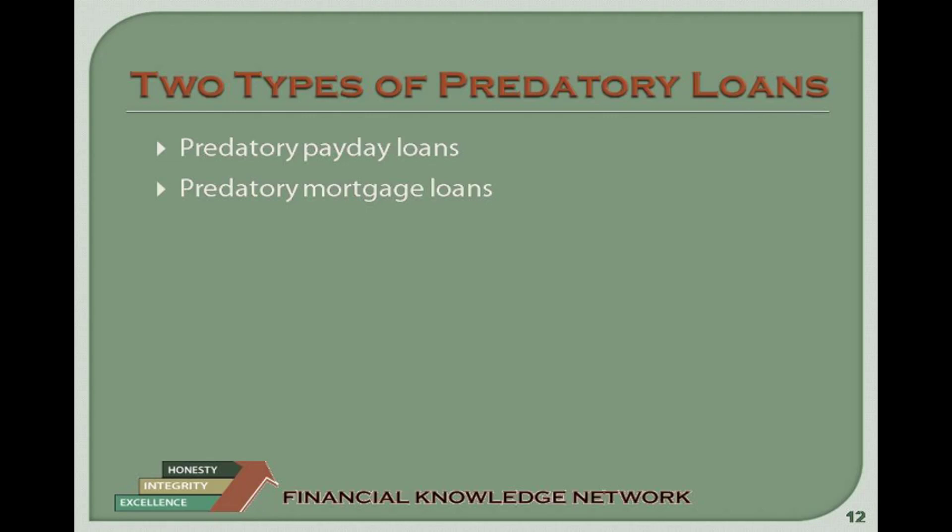Loan Flipping: A lender flips a loan by refinancing it several times within a short time frame to generate fee income without providing any net tangible benefit to the borrower. Flipping can quickly drain borrower equity and increase monthly payments, sometimes on homes that had been previously owned free of debt. Unnecessary Products: Sometimes borrowers may pay more than necessary because lenders sell and finance unnecessary insurance or other products along with the loan. Asset-Based Lending: Predatory lenders may approve a loan based on the value of a customer's equity in the home instead of his or her ability to repay the loan. The lender may later encourage the customer to default so the lender can get ownership of the home. Steering and Targeting: Predatory lenders may steer borrowers into subprime mortgages even when the borrowers could qualify for a less expensive typical loan. Vulnerable borrowers may face aggressive sales tactics and sometimes outright fraud.